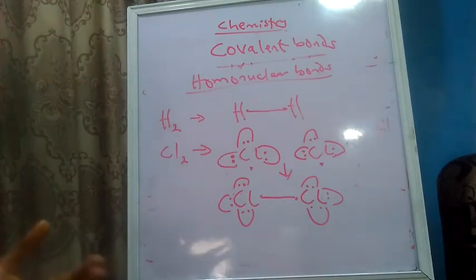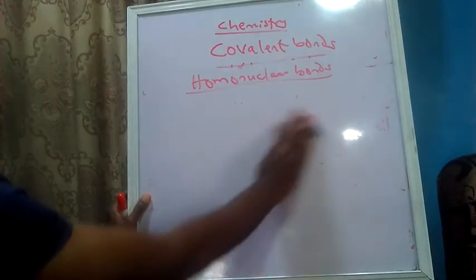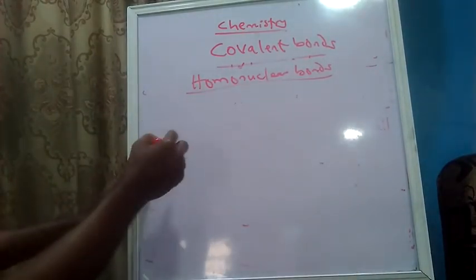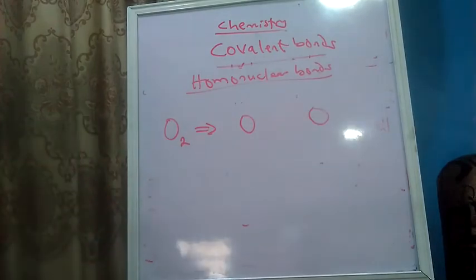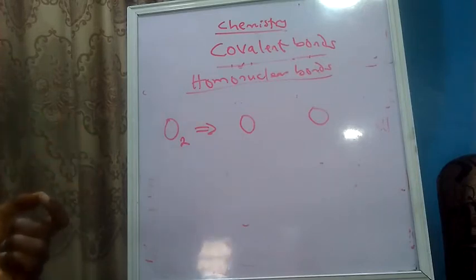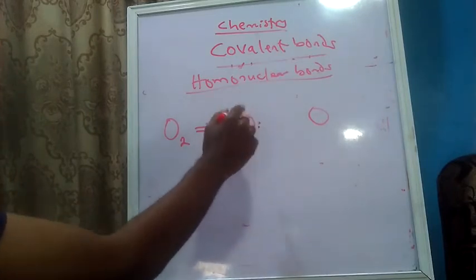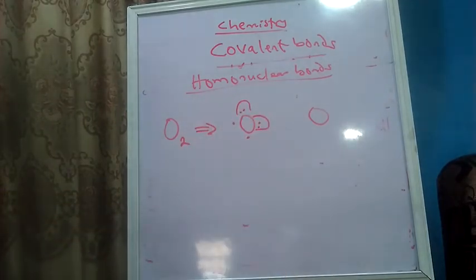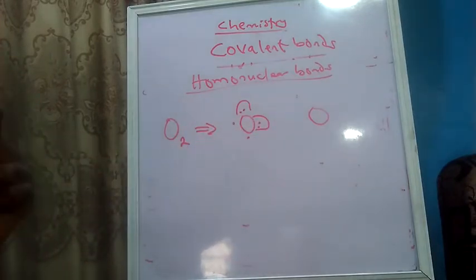Now let's go to a homonuclear compound that forms a double bond, so you can understand another concept. We'll take oxygen. Oxygen is usually written as O2, meaning one atom of oxygen with a second atom of oxygen. Oxygen has a configuration 2-6, meaning it has six valence electrons, so we place six dots around the chemical symbol — one, two, three, four, five, six. Oxygen has two paired electrons and two unpaired electrons.